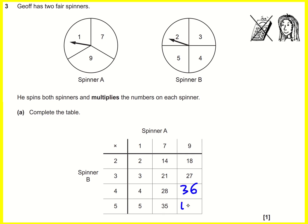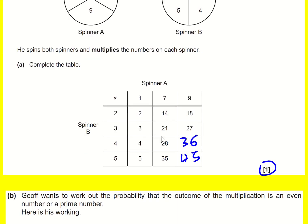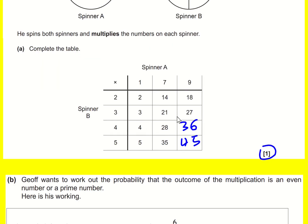And 5 times 9 gives 45. This is called a sample space diagram. So Jeff wants to work out the probability that the outcome of the multiplication is an even number or a prime number, and he does this with his working.